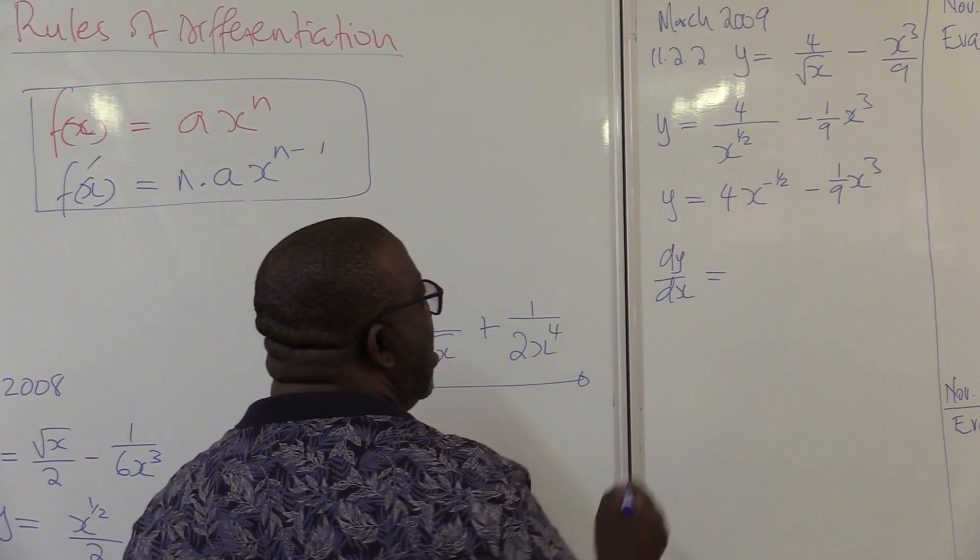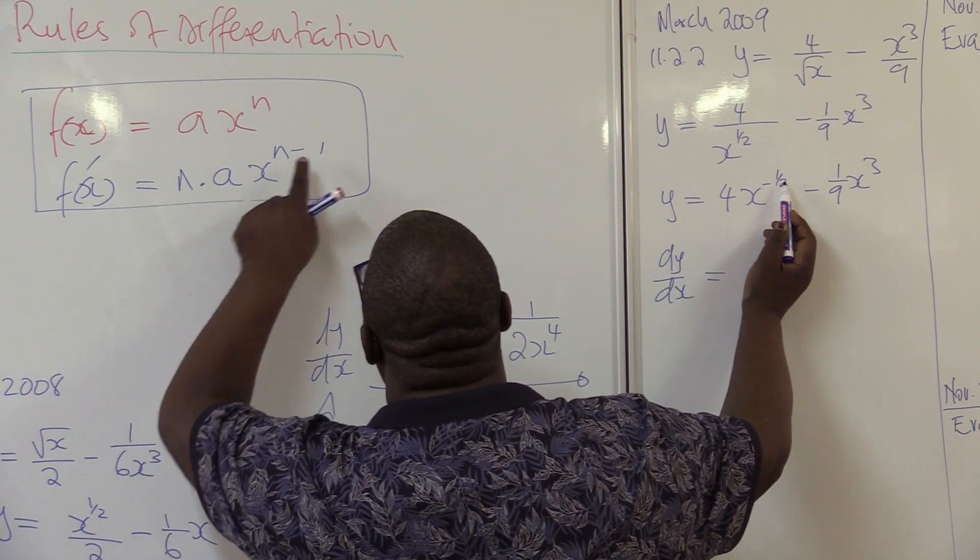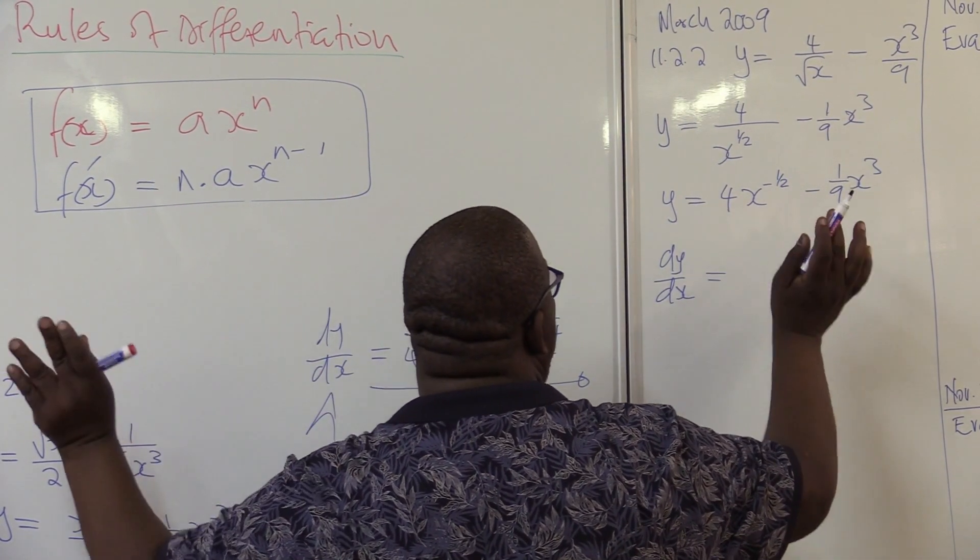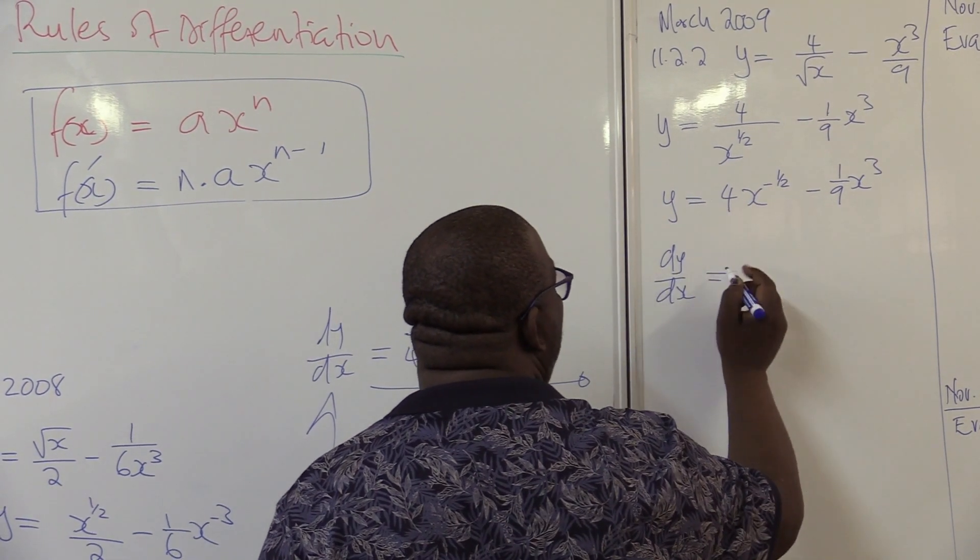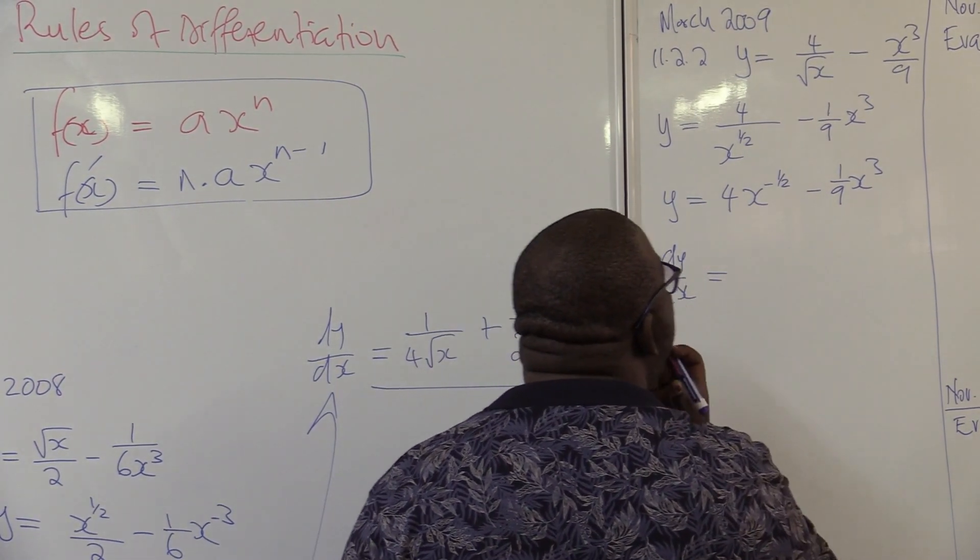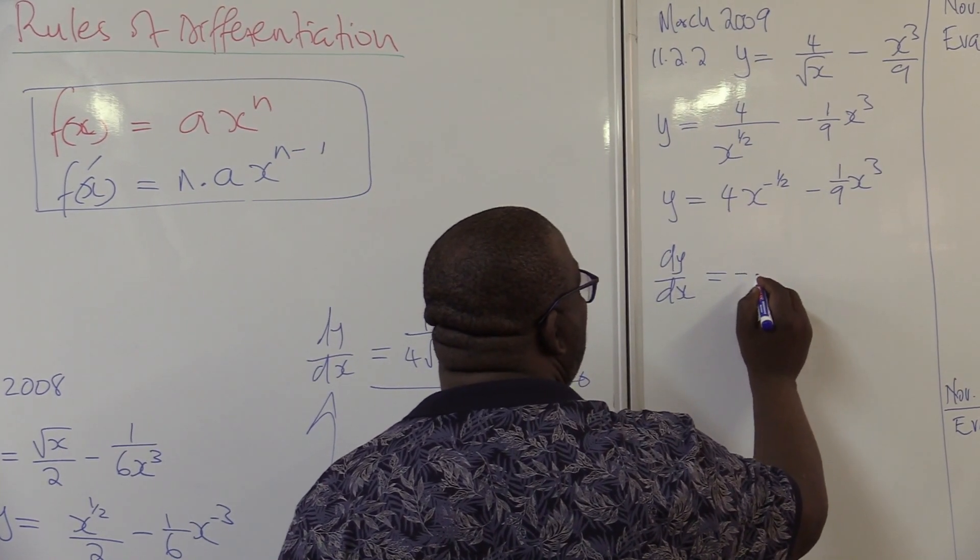This then will be equals to, you take the exponent, you multiply it to this side, then you subtract one. That's what we are doing. That's the only rule that we are playing with. This times that. What is half of minus 4? Minus half of 4 will give us minus 2.